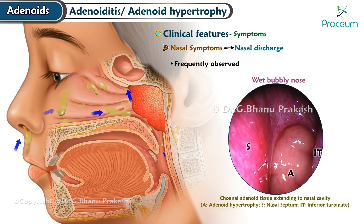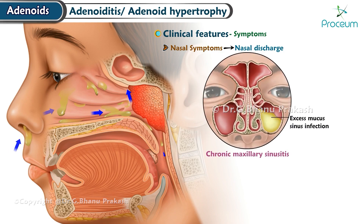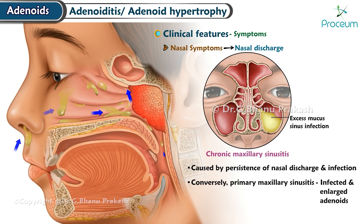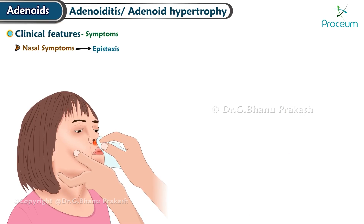Adenoid enlargement is commonly associated with chronic maxillary sinusitis, caused by persistence of nasal discharge and infection. Conversely, primary maxillary sinusitis can lead to infected and enlarged adenoids. Epistaxis may occur when the adenoids are acutely inflamed, particularly during nose blowing.